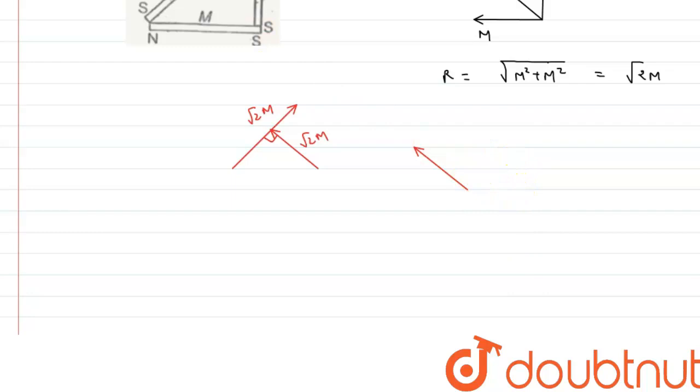So this is how we can reconstruct this diagram. And if we carefully analyze, the resultant of these two will be in the upward direction. So we can make it this way.